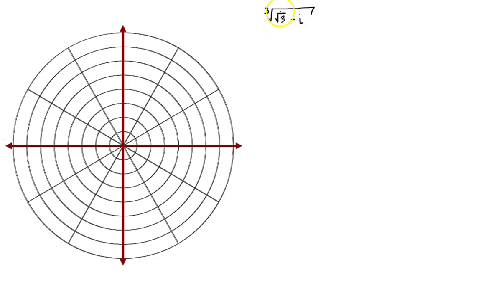First off, cube root of root 3 minus i, I can write this differently. I'm saying this is equal to x. I'm looking for a number, the cube root of root 3 minus i. So I can write this differently and say I'm looking for root 3 minus i is equal to x cubed. I've got a cubic function which means there must be three distinct roots.